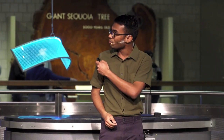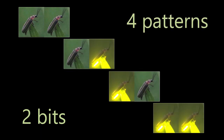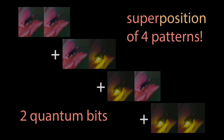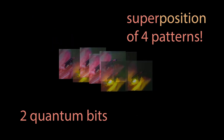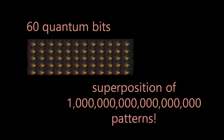Now what if you had not one but two bits — best friends? These two can at any time be in one of four patterns in the usual forest. But in the quantum forest, superposition lets them be in all four patterns at the same time. If you had a little village of 60 of them, the number of patterns becomes a quintillion.